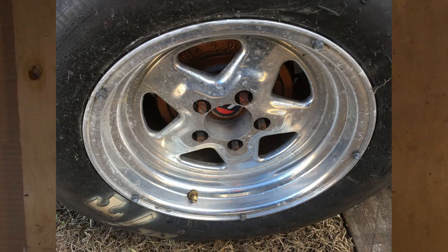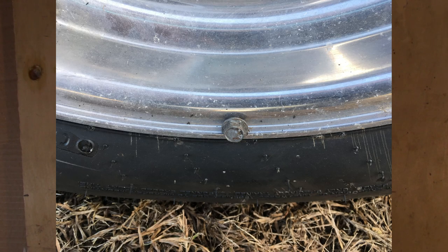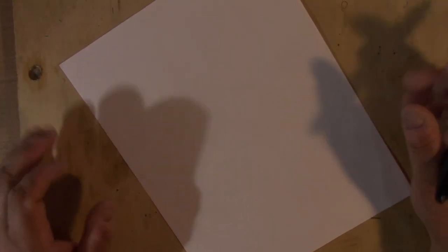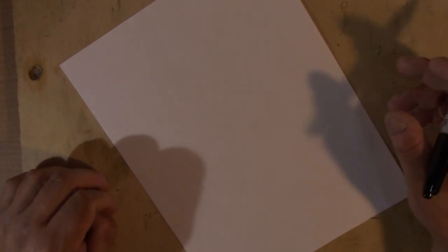So tire screws, that just seems counterproductive because screws and tires don't usually go together, but it is a real thing and it's very important on a drag car. Typically you find them on race vehicles, some industrial applications, but on a drag car it's very important and here's why.